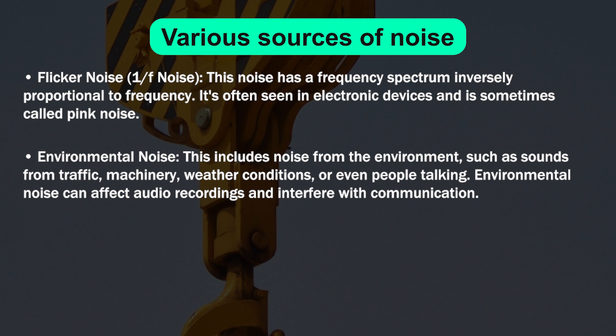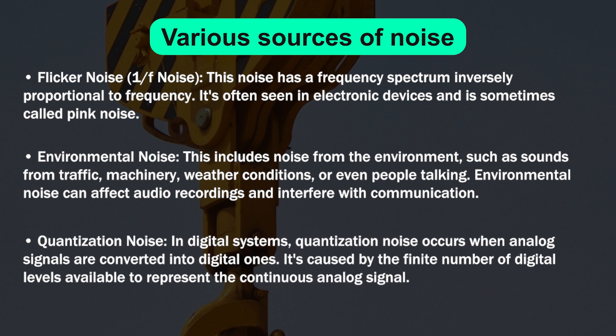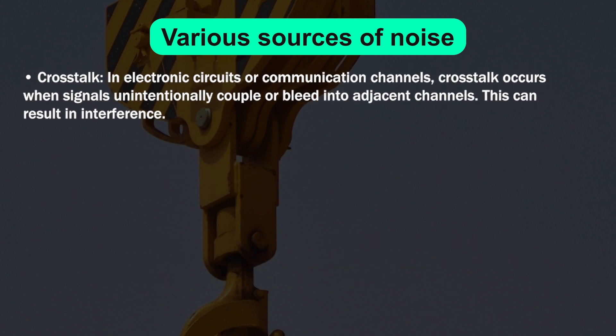The next point is quantization noise. In digital systems, quantization noise occurs when analog signals are converted into digital form. It is caused by the finite number of digital levels available to represent the continuous analog signal. The next point is cross talk: in electronic circuits or communication channels, cross talk occurs when a signal unintentionally couples or bleeds into adjacent channels, resulting in interference.